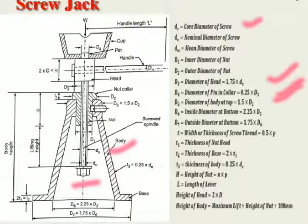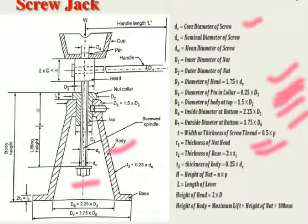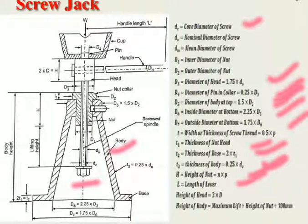d6 is the inside diameter at the bottom, calculated by 1.75 × d6. t is the width or thickness of the screw thread, calculated by 0.5 × p, where p is the pitch. t1 is the thickness of the nut head; t2 is the thickness of the base, equal to 2 × t1; t3 is the thickness of the body, equal to 0.25 × d₀. h is the height of the nut, calculated by n × p. l is the length of the lever. Height of the body equals maximum lift plus height of nut plus 100 mm.